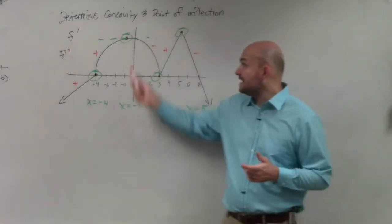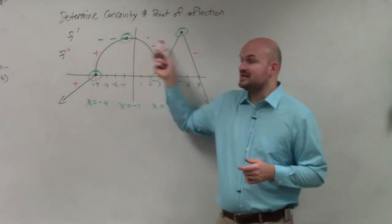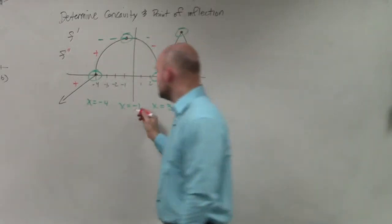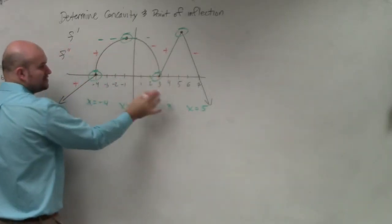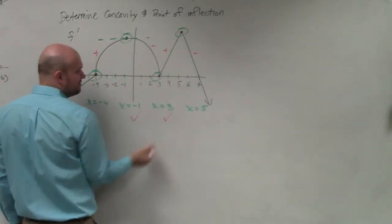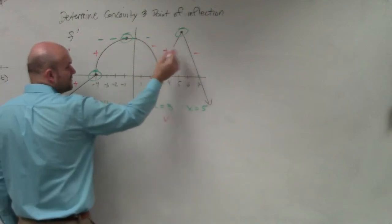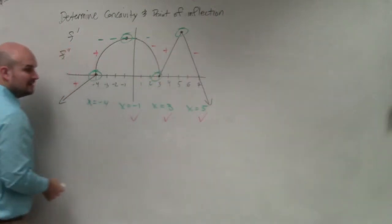So, you can see that at negative 1, you're changing from positive to negative. Is that a point of inflection? Of course it is. At 3, you're changing from negative to positive, point of inflection. At 5, you're changing from positive to negative, inflection.